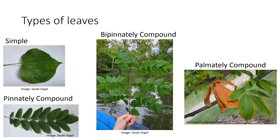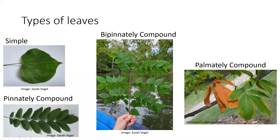A simple leaf would be, for instance, this redbud leaf — that is one whole leaf. Then we have different kinds of compound leaves. Pinnately compound would be one main axis with leaflets coming off — it's only divided one time. A bipinnately compound leaf, like this Kentucky coffee tree, has one main axis and then axes dividing again — so it's divided twice, and leaflets come out from there.